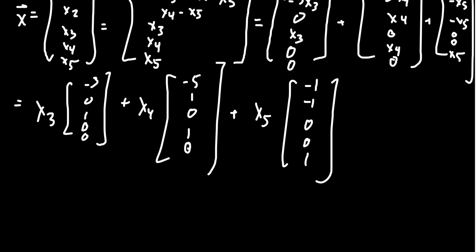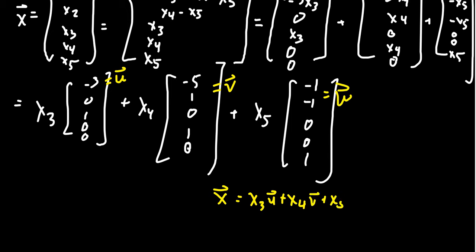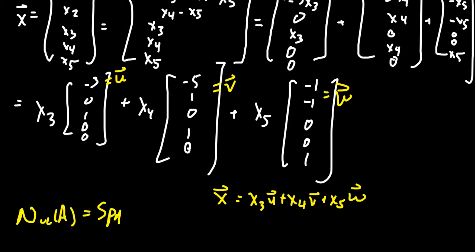For simplification, let's call this first vector u, this second one v, and this third one w. So what we now see is that x is just the combination x3 times u plus x4 times v plus x5 times w. And since x3, x4, and x5 are free variables, we can choose them to be whatever we want — x will be a linear combination of these three vectors. And as x was the general solution, this gives us that the null space of A equals the span of u, v, and w.